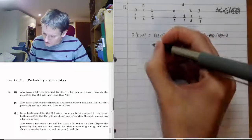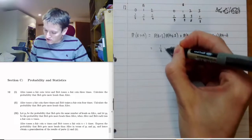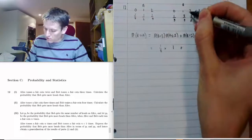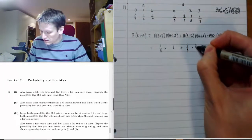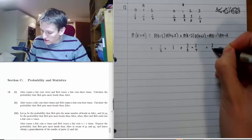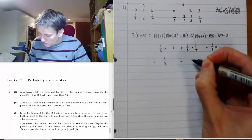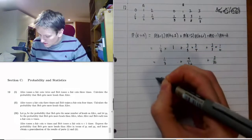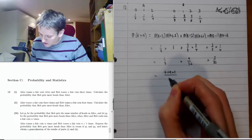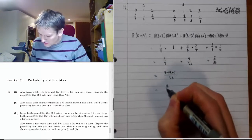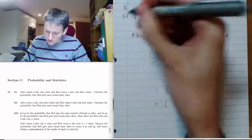We can now write down all of these probabilities from our distributions. The probability B equals three is one eighth; P(A ≤ 2) is just one. P(B = 2) is three eighths and P(A ≤ 1) is a quarter plus a half, which is three quarters. P(B = 1) is three eighths and P(A = 0) is one quarter. Working these out and adding: four plus nine plus three over 32, which is 16 over 32 — equal to one half. Part one done.